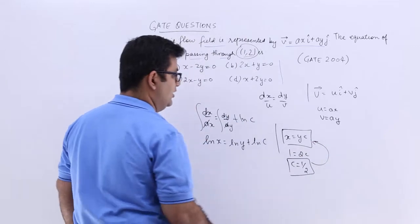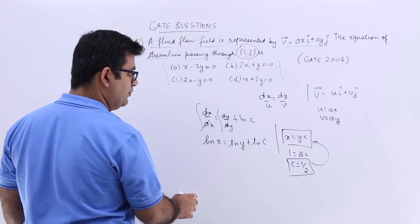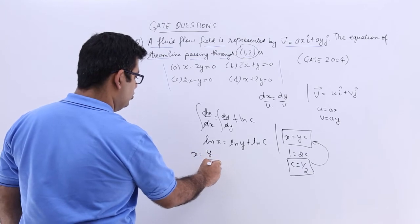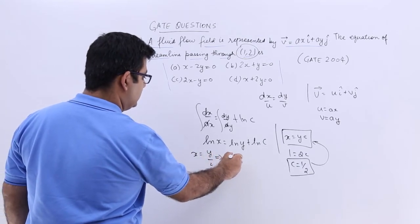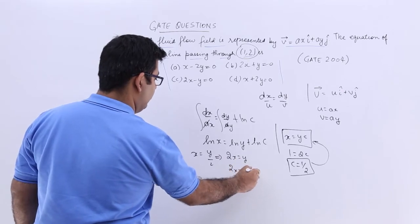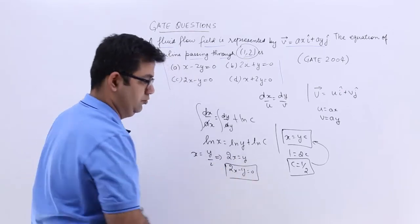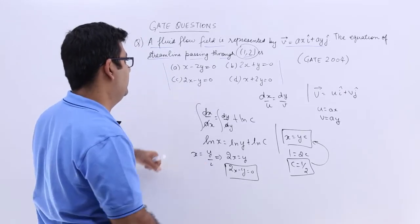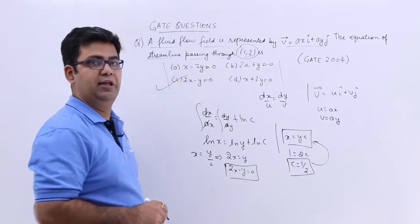So I will put it over here. The equation will become x is equal to y upon 2, which means 2x is equal to y, or 2x minus y equal to 0. Now this equation corresponds to option number c. So option number c is the correct one.